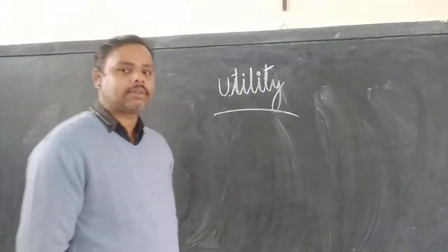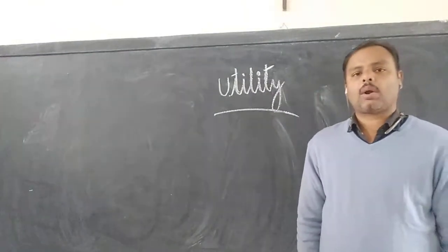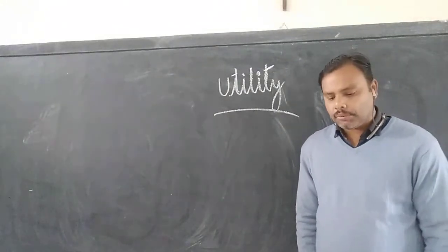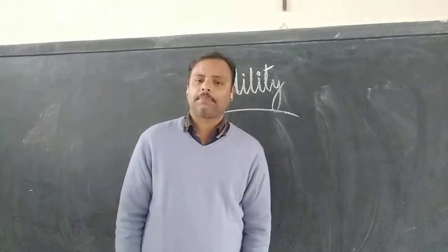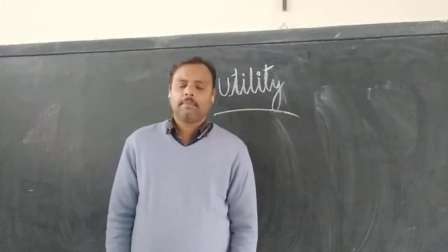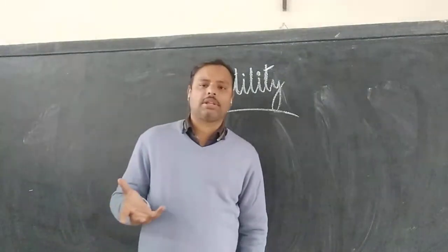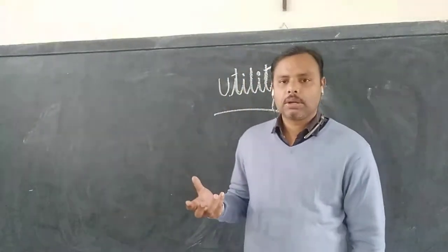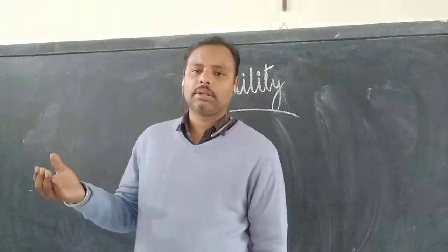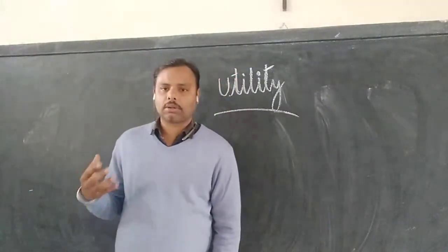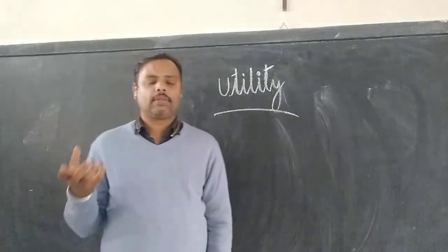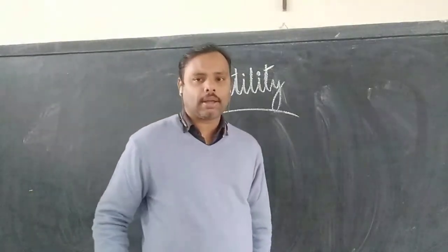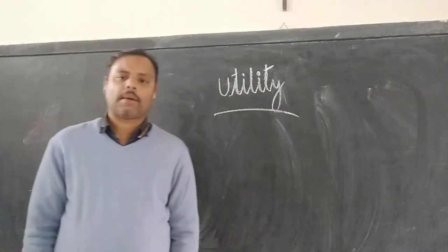Next, utility is abstract. Abstract here means it cannot be seen, it cannot be touched, but it can only be felt. For example, the service of a teacher — you cannot touch it, you cannot see it, but you can feel it. The service of a teacher is to deliver a good lecture and make you understand the points. If a teacher is capable of delivering his lesson and making you understand, he has touched your mind. There is a psychological effect, and that is why utility is measured as an abstract, psychological term.